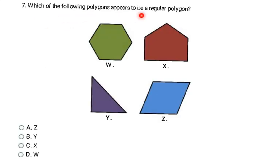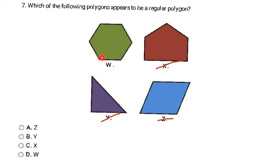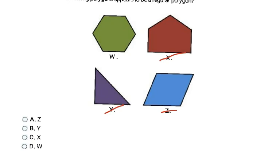This question asks which of the following polygons appears to be a regular polygon. I have to know the definition of regular: all sides are the same size and all angles are the same size. Pentagon X has sides of different measures — not X. In Z, one angle is obtuse and another is acute — angles aren't the same, so not Z. In Y, there's a right angle and an acute angle — not the same, so not Y. But W: the sides all look the same size and all the angles look the same size. So W is my answer.